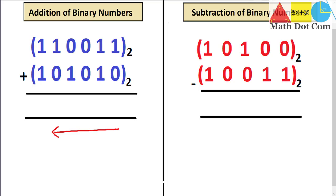Starting with the first column from the right, we have to add 1 plus 0. Obviously 1 plus 0 is 1. At this point we don't need to go deep into how you add binary numbers because it's so simple.